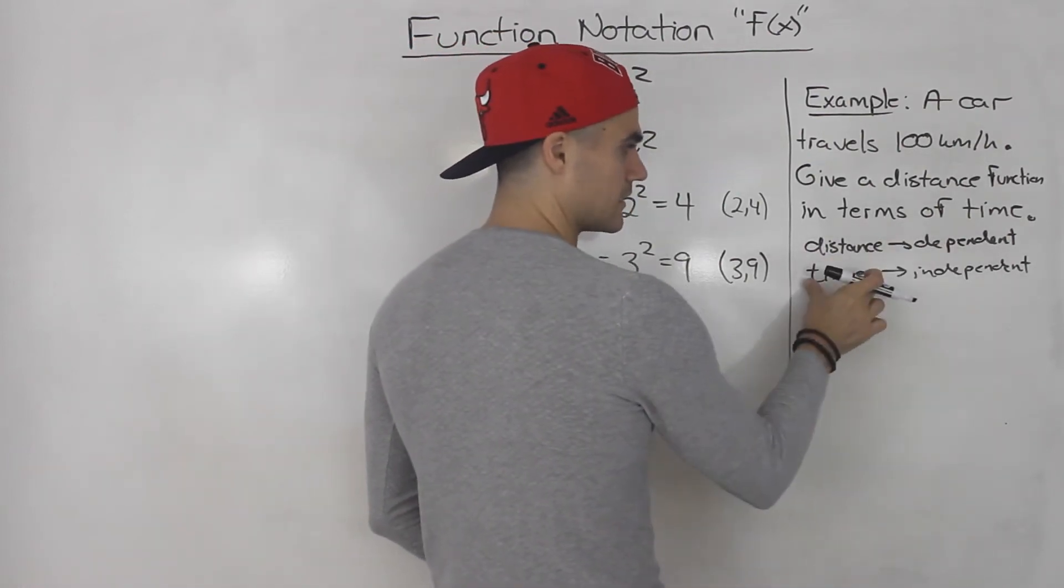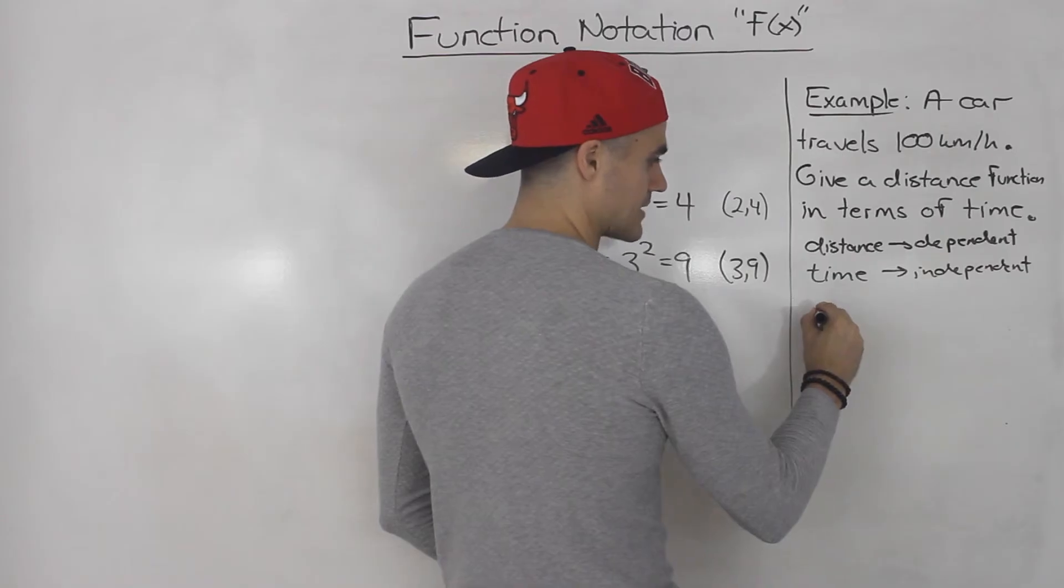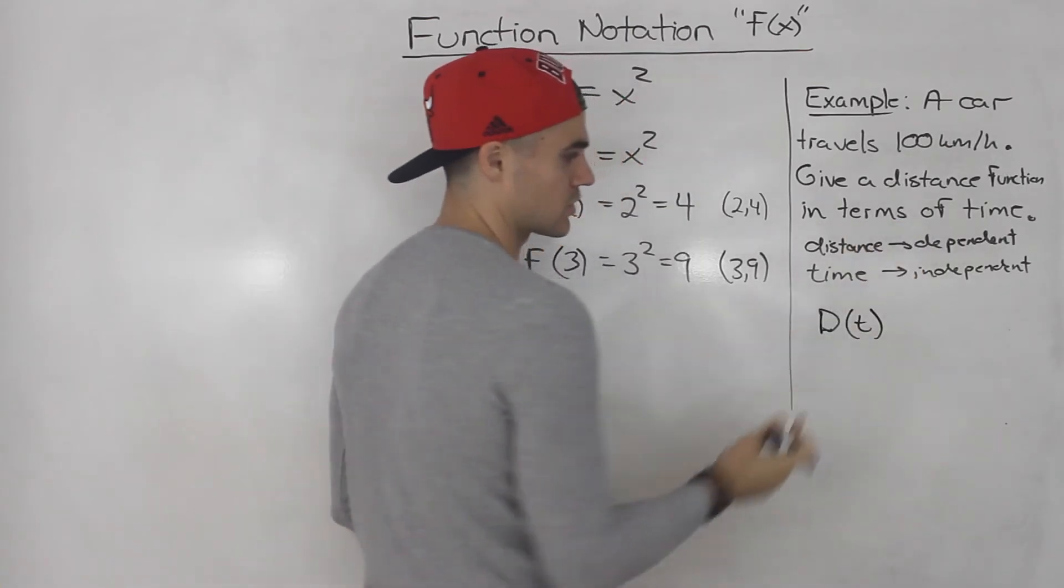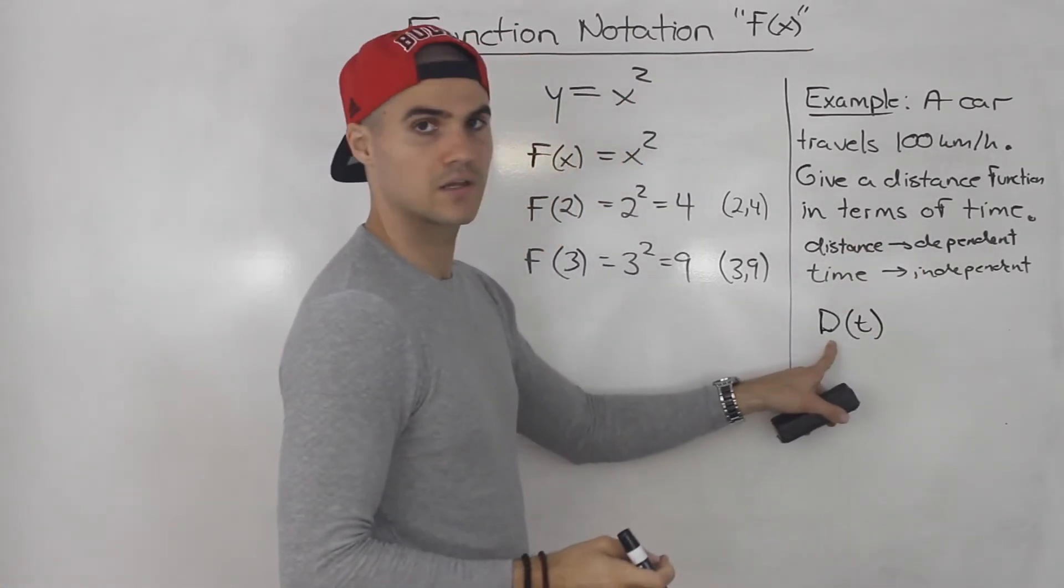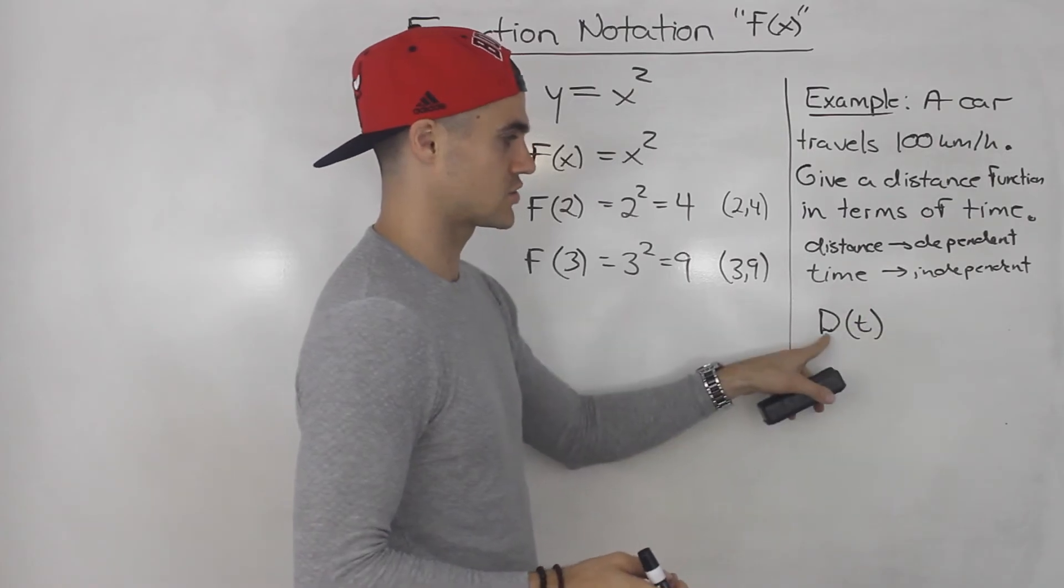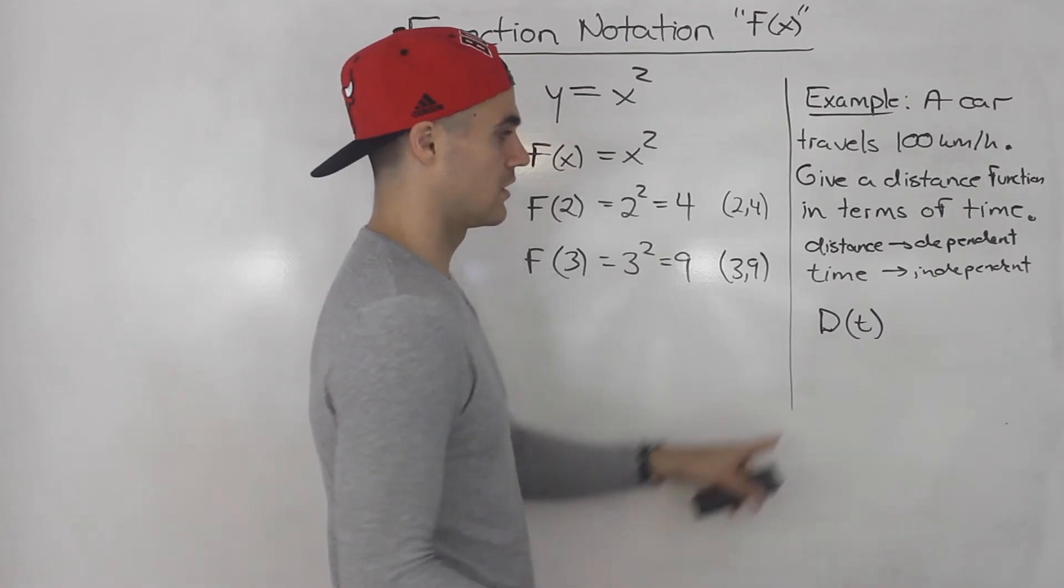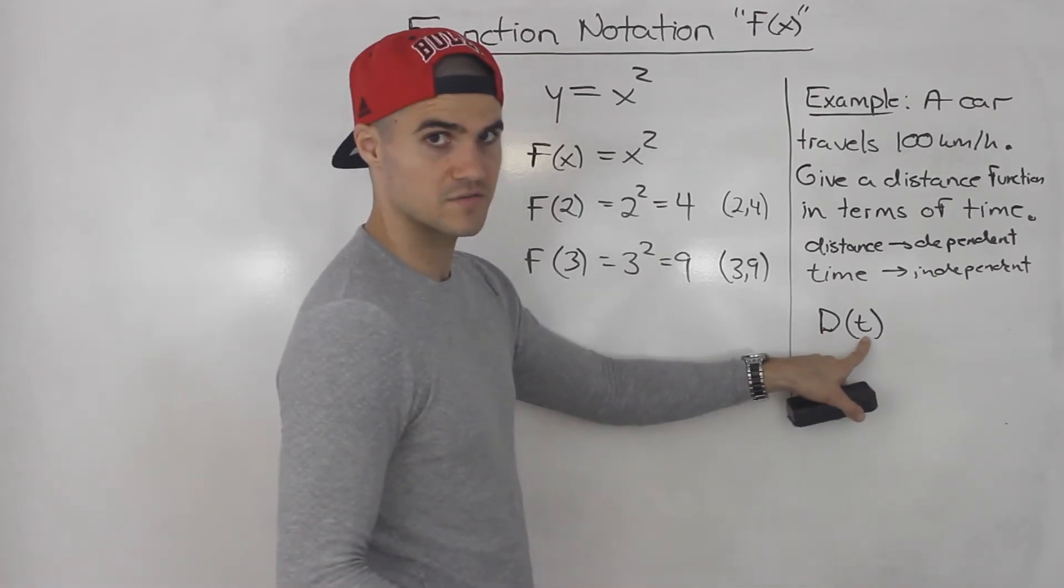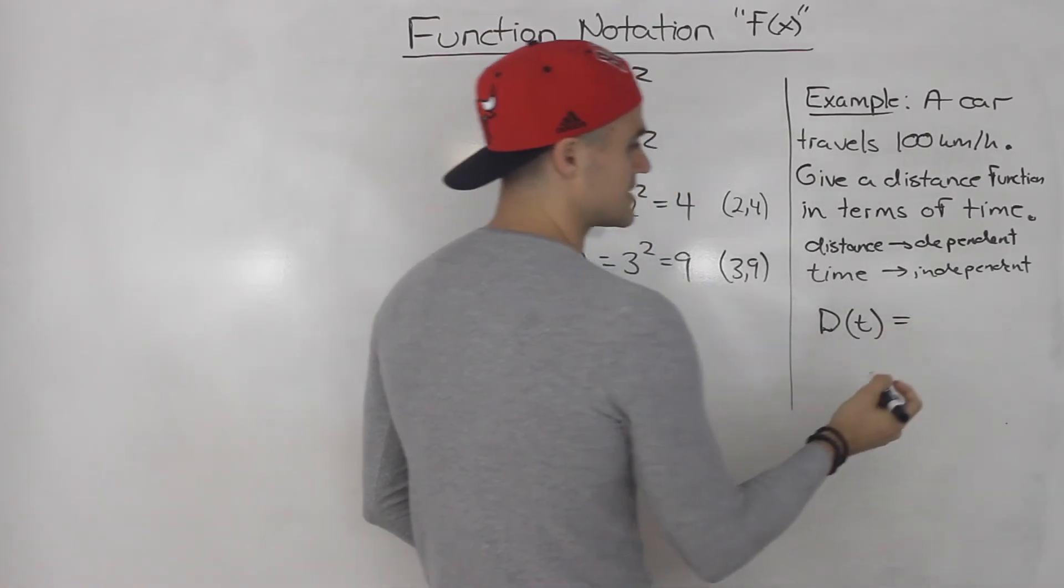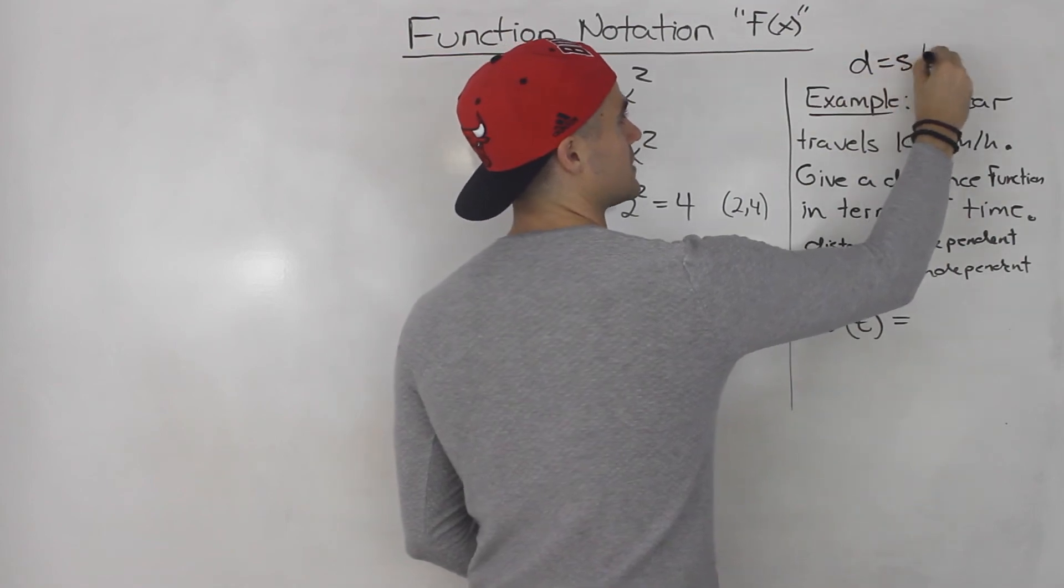So if distance is the dependent, time is the independent, we can write this as the value of the distance as a function of time or in terms of time. That's how we can represent that distance function. Instead of just writing d is equal to something, we're going to write d in terms of t is equal to something. This is just notation. And what is distance equal to? We know distance, in general, is equal to speed times time.